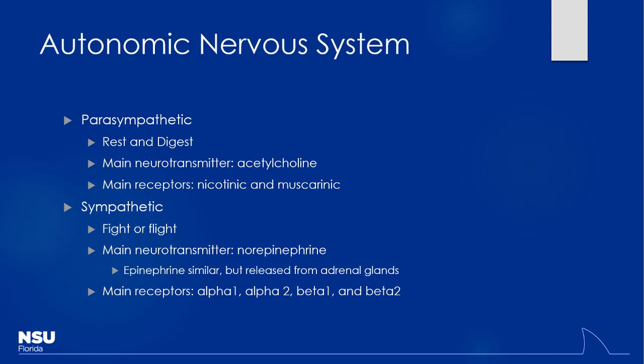The two main divisions of the autonomic nervous system are the parasympathetic and the sympathetic. Sympathetic is your fight-or-flight response. I always use the example of a bear jumped out of the closet and tried to attack us. If I had you come up here and give a talk all of a sudden impromptu, you'd probably have your fight-or-flight response. The parasympathetic is also termed as your rest and digest — you're just kind of hanging out, not really doing much. Maybe you had some breakfast before you came in here; that's more likely to be your rest and digest.